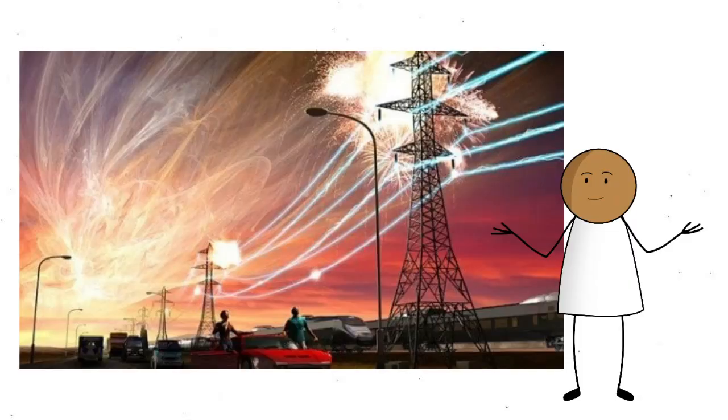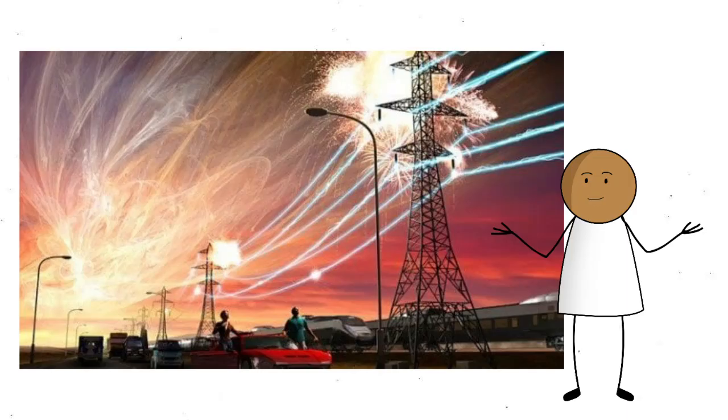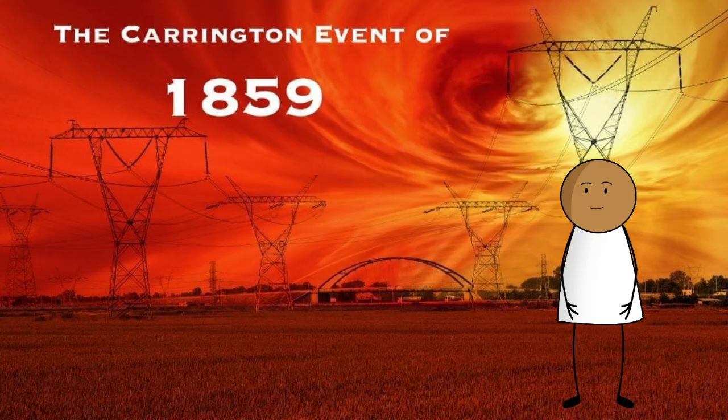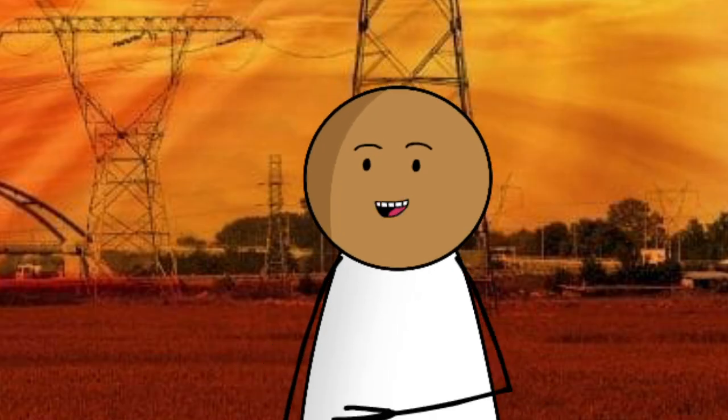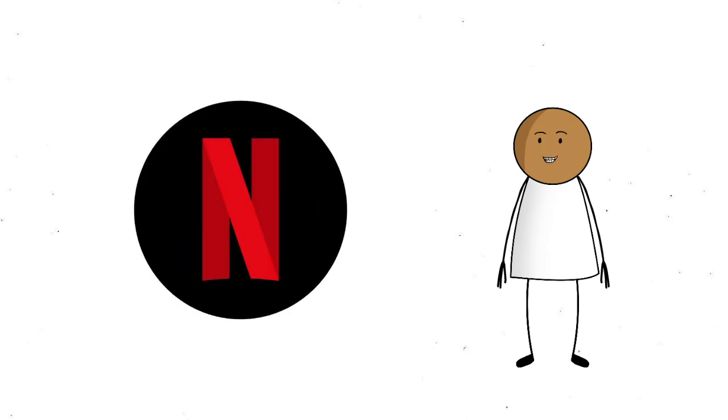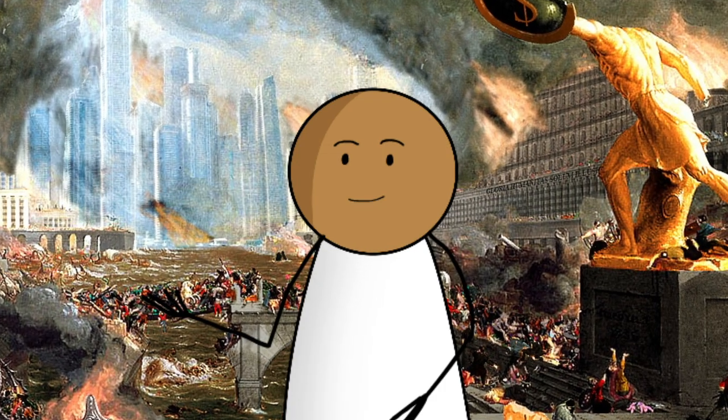One solar storm in 1989 was strong enough to knock out power in Quebec for hours. And back in 1859, the Carrington event, a massive geomagnetic storm, made telegraph lines spark and set some on fire. Imagine what that would do to our internet-reliant lives today. No TikTok. No Netflix. Civilization might collapse.